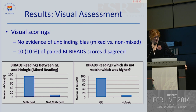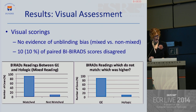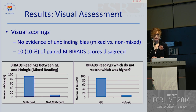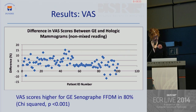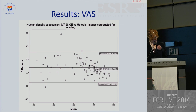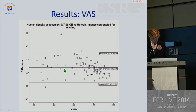Turning to the visual scorings: there was no evidence of unblinding bias — the expert observers perceived density the same whether they were reading a mixed batch or purely GE or Hologic. However, 10% of the BIRAD scores disagreed, and where they disagreed, the GE mammograms were perceived as being more dense in nearly all cases. The difference was usually only one score — the commonest was BIRADS 2 on GE and 1 on Selenia. The VAS scatter plot shows many more positive readings, indicating that the GE mammograms were perceived as a bit denser, and this is confirmed on the Bland-Altman plot, where there clearly is a systematic bias in favor of the GE mammograms.